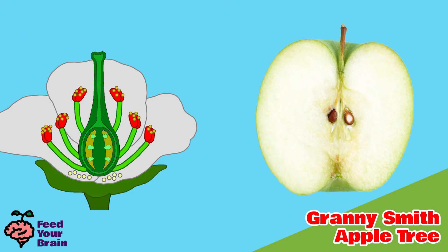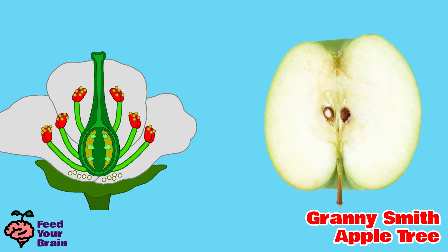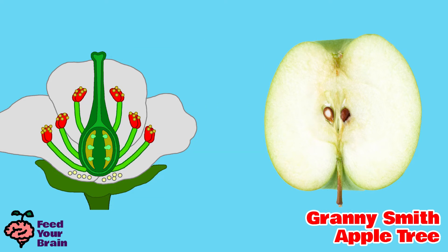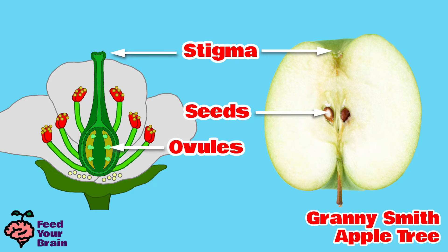If you turn an apple upside down, you can match up the parts of the apple with the parts of the apple tree flower blossom. At the base of the apple is the stigma. The seeds in the middle used to be the ovules, and the stem of the apple used to be the stem of the flower, called the pedicel. And that is how an apple tree's flower blossom becomes pollinated and turns into an apple.